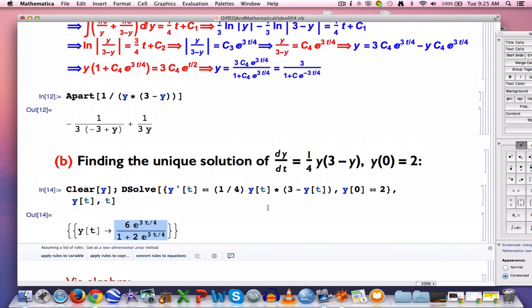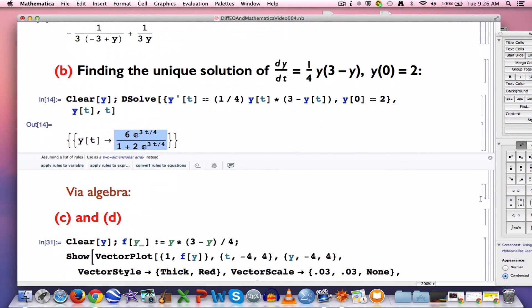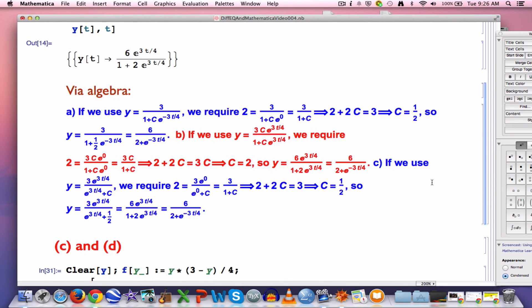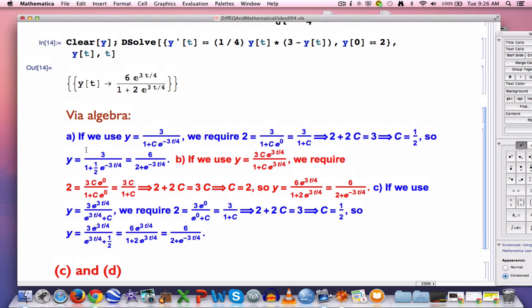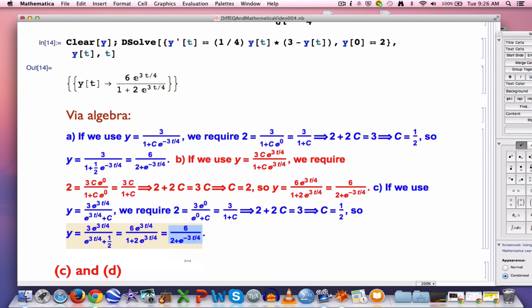Is that the same answer as what we got before? Well, okay, we didn't solve the initial value problem before. Here's how you can solve the initial value problem with algebra. And I'm doing it in three different ways using three different forms of the general solution, giving you different values conceivably for the constant. Any way you do it, you do get the same thing that Mathematica got here: 6e^(3t/4) divided by 1 plus 2 times e^(3t/4), which can be written in different ways like this right here. Okay, so pause the video and look this over.